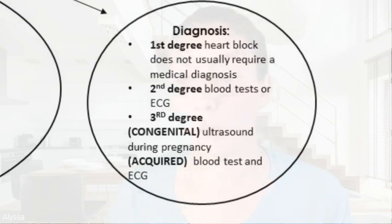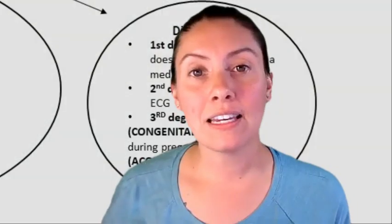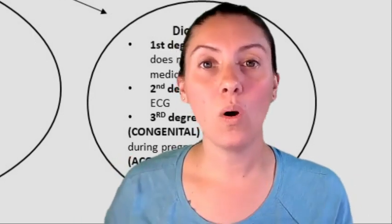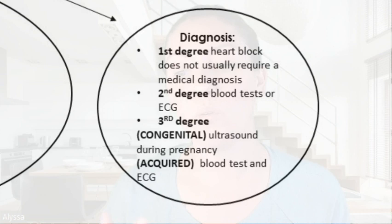Now let's have a peek at how heart block is diagnosed. First degree heart block does not usually require a medical diagnosis. Second degree will be through blood tests or EKGs. Third degree can either be acquired or congenital — congenital is diagnosed through ultrasound during pregnancy, and acquired is through blood tests and ECGs.